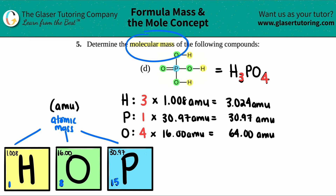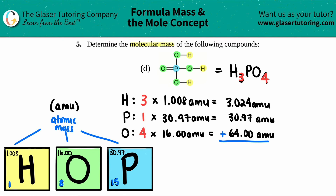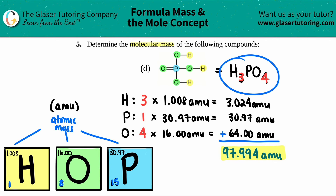To find the total molecular mass, we add these up: 64 plus 30.97 plus 3.024 gives us a total molecular mass of 97.994 AMU. And that is the final answer — that's the molecular mass of the entire compound H₃PO₄.